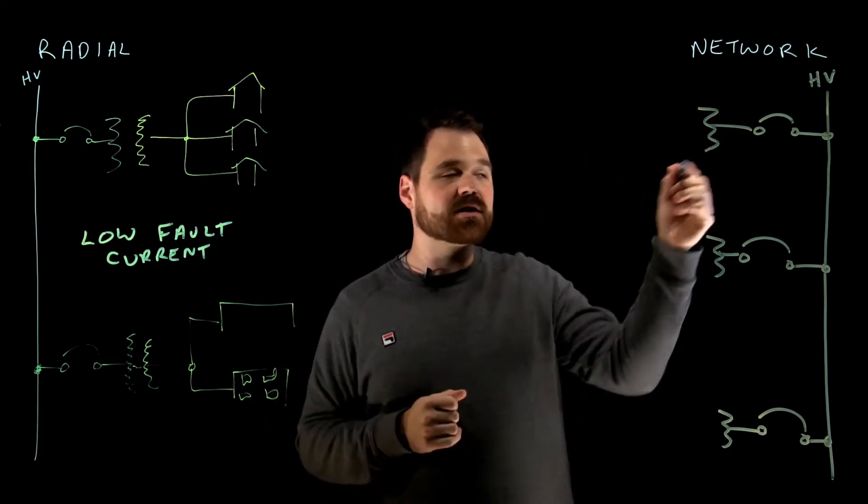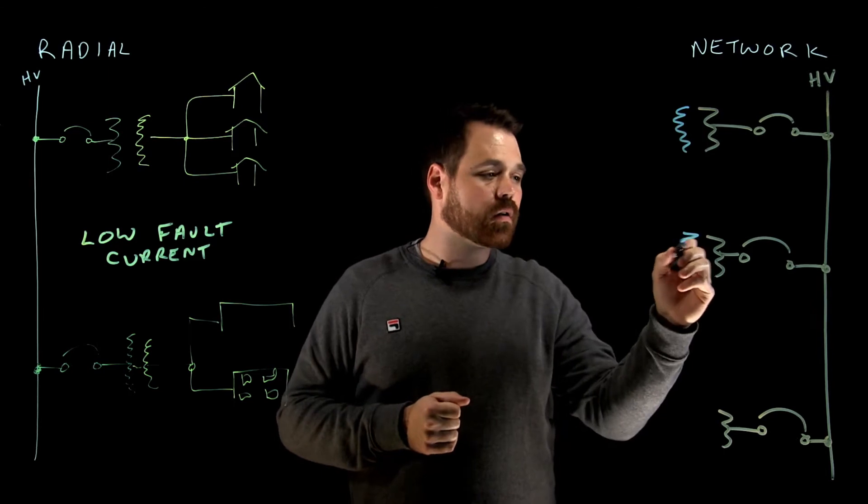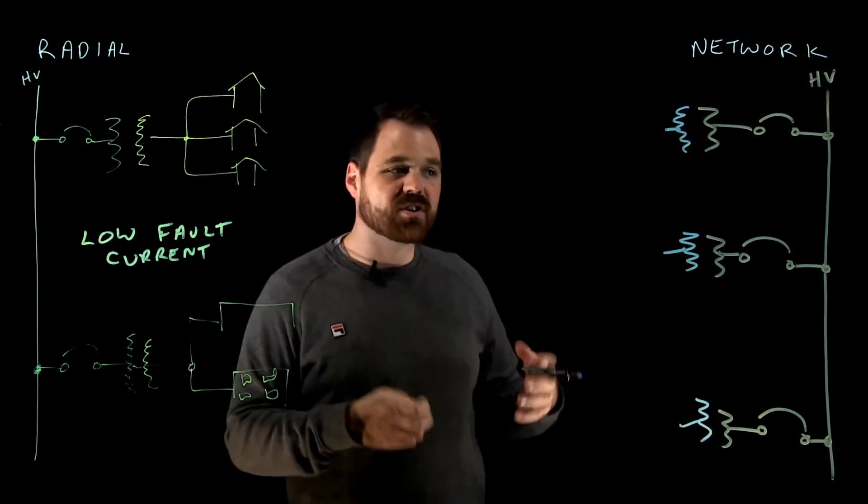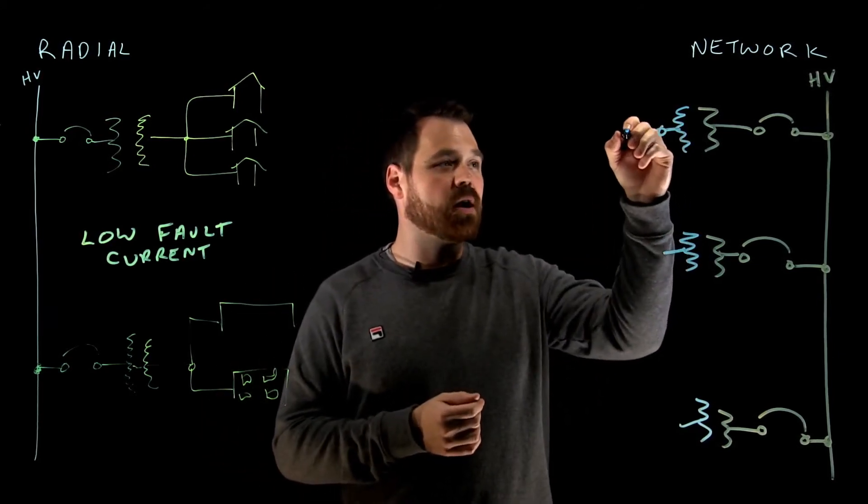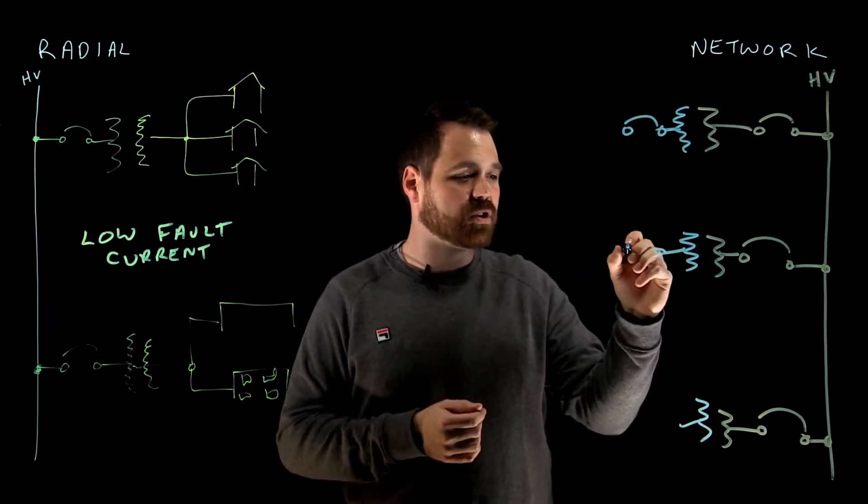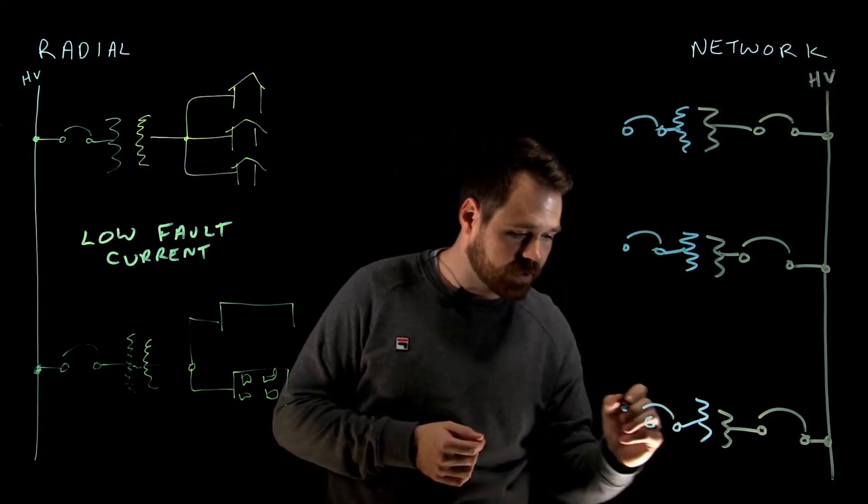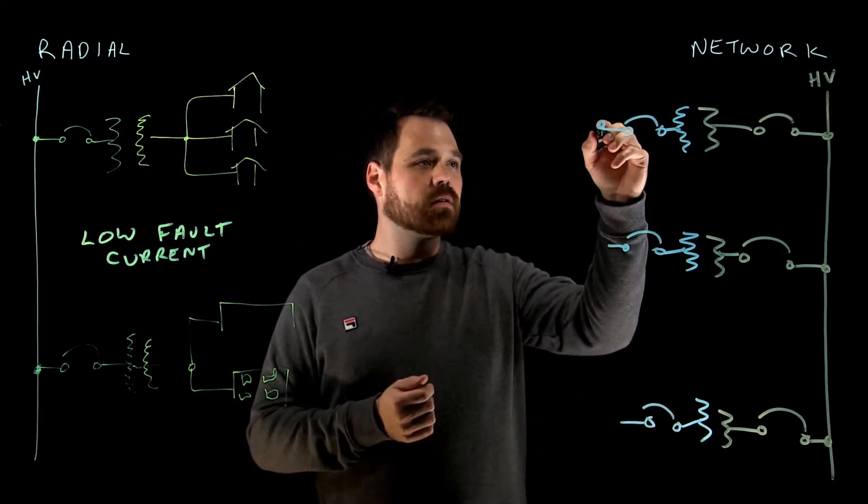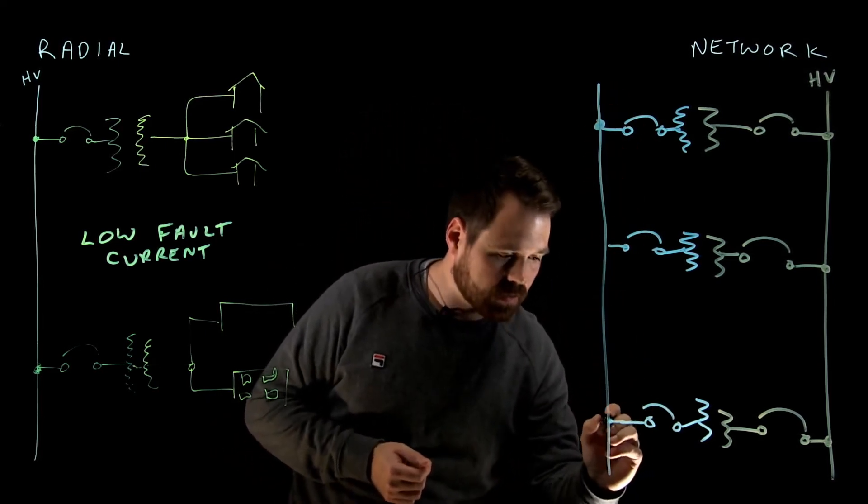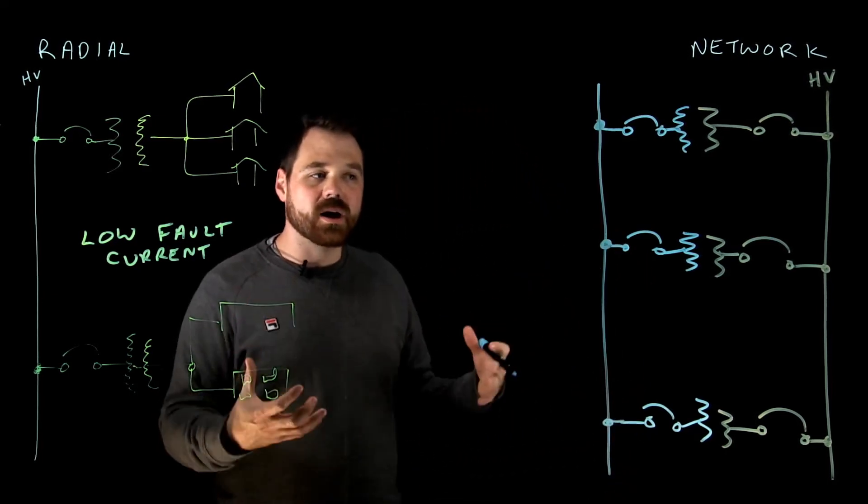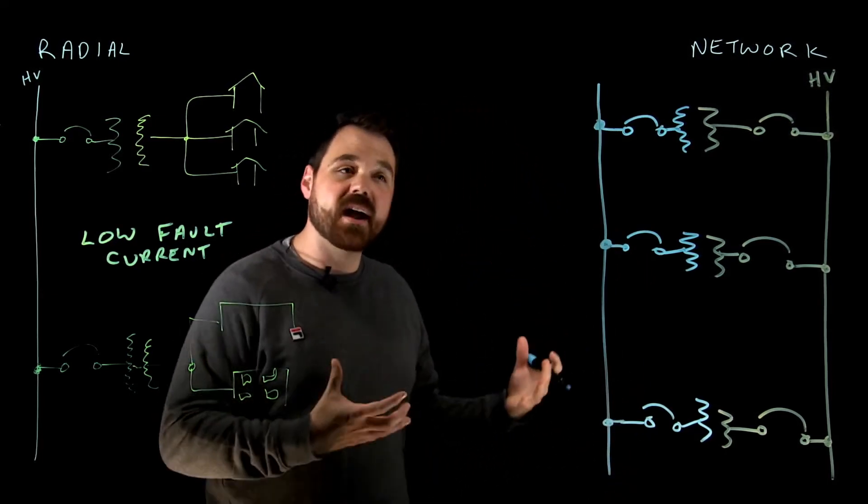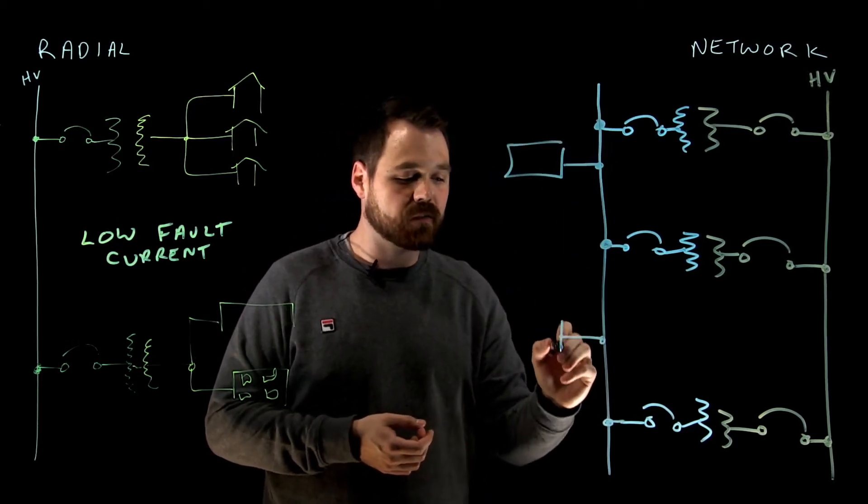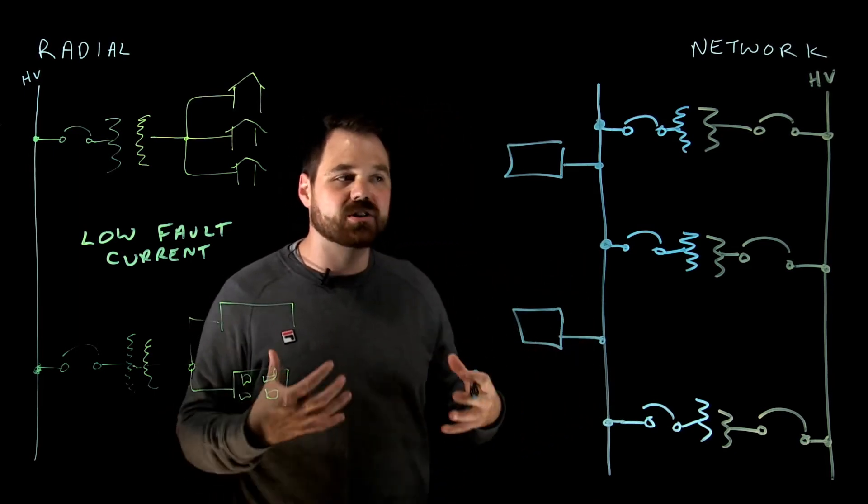Now the difference here comes in the secondaries of these transformers. So in a network system, we also are going to parallel the secondaries of these transformers. Now because of that, we also are going to require that disconnecting means and protection - just using a circuit breaker for simplicity. These are all going to be connected in parallel as well. Then from there, what we would do is we would go feed the loads - go feed that bigger, most likely bigger commercial or institutional loads.